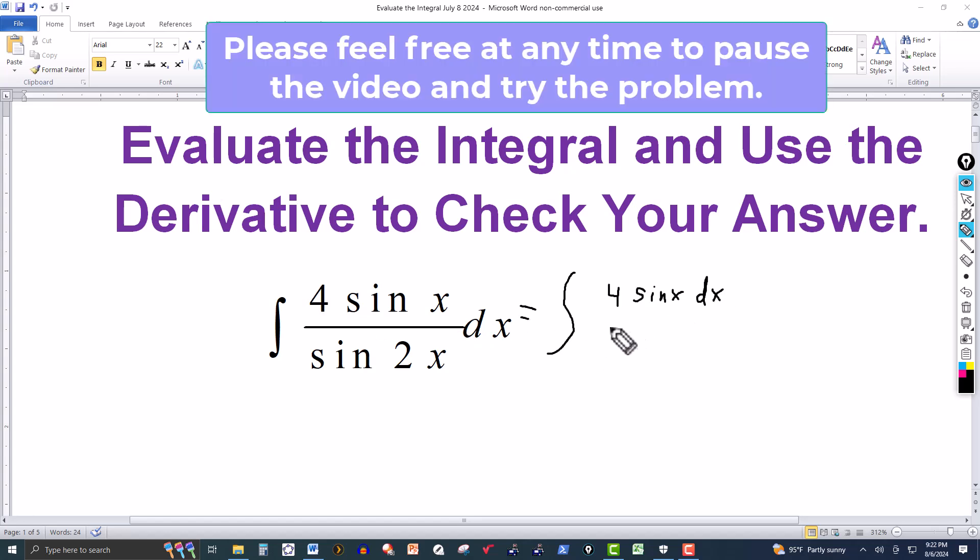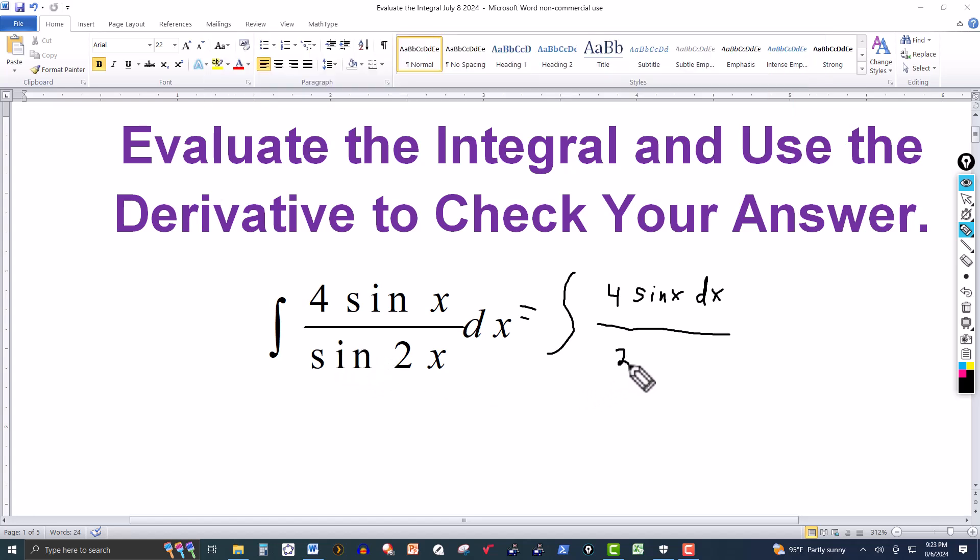So here I'm going to be using a double angle identity for the denominator. I know that sine of 2x is equal to 2 sine of x times cosine of x. And of course I have a sine here that I can cancel with this one here.